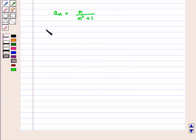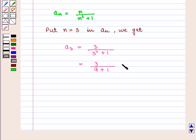Similarly, putting n is equal to 3 in a_n we get a_3 is equal to 3 upon 3 squared plus 1 which is equal to 3 upon 9 plus 1 that is 3 by 10. So, a_3 is given by 3 upon 10.